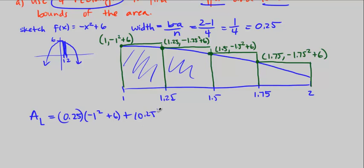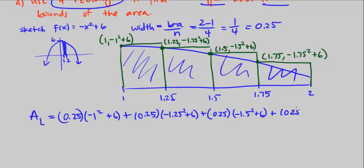The next rectangle is the base of 0.25 times the y value of negative 1.25 squared plus 6. Plus the next rectangle is 0.25 is the base, the height is negative 1.5 squared plus 6. Finally, this rectangle has a base of 0.25 and a height of negative 1.75 squared plus 6.